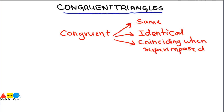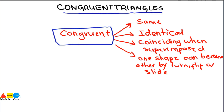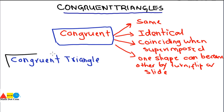It can also mean one shape can become another by a turn, flip, or slide. So these are the multiple meanings of the word congruent. Using these meanings, let's apply this concept to triangles — so what is meant by a congruent triangle?